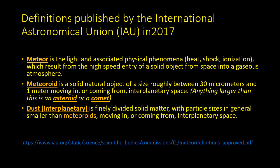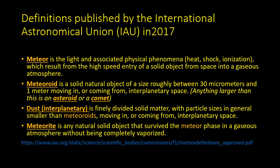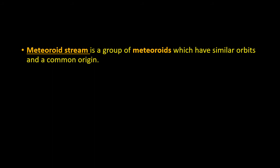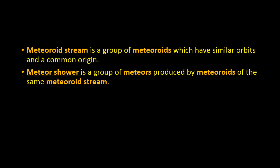Dust is basically a small meteoroid. If a meteoroid is large enough to hit the ground — bigger than a few centimetres in diameter — without being completely vaporised, then that's a meteorite. A meteor stream is a group of meteoroids which have similar orbits and a common origin, be it an asteroid or a comet. A meteor shower is a group of meteors produced when the Earth passes through a meteor stream.